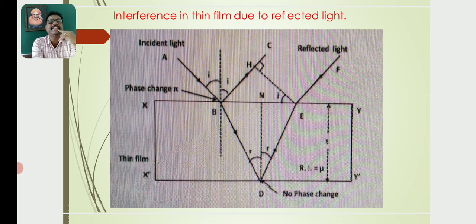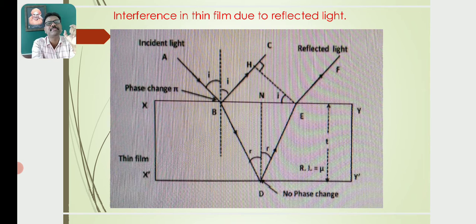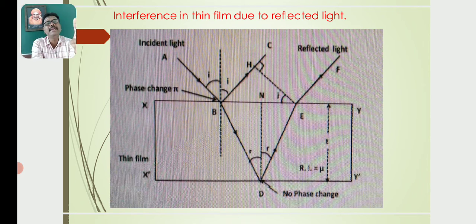Let T be the thickness of the film, μ be the refractive index of the film, and I be the angle of incidence. DN is the normal drawn at point D to the interface X'Y'. Draw the line EH perpendicular to BC. BH indicates the path difference between BC and EF. Whether the point P on the screen is dark or bright depends on the path difference between the reflected rays BC and EF, i.e., the value of BH.